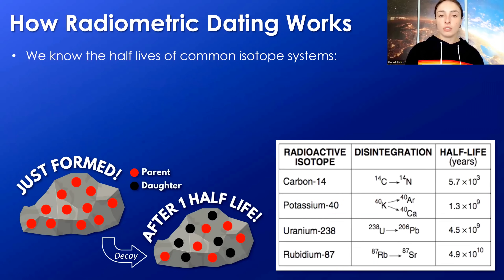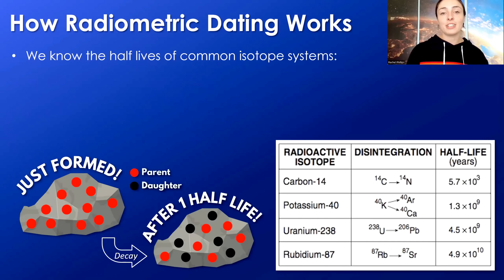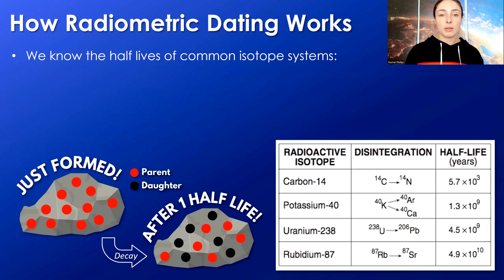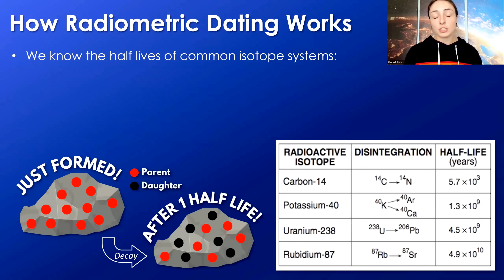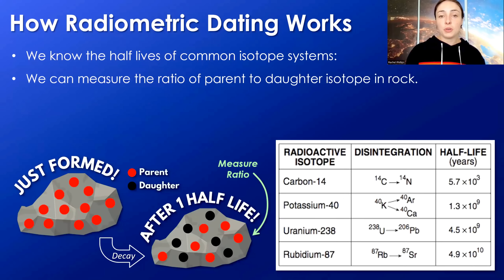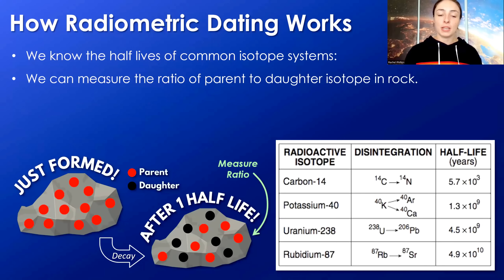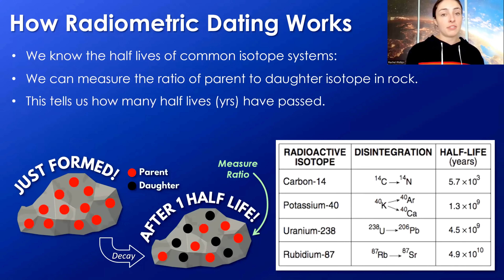Because we know the half-lives of common isotope systems used for radiometric dating — like carbon-14 decay, potassium-40 decay, uranium-238 to lead-206, uranium-235 to lead-207, or rubidium-87 to strontium-87 decay — we can go to a rock, take it back to our lab, measure the ratio of parent-to-daughter isotope in the rock, estimate how many half-lives have gone by, and thus how many years have passed since it formed.